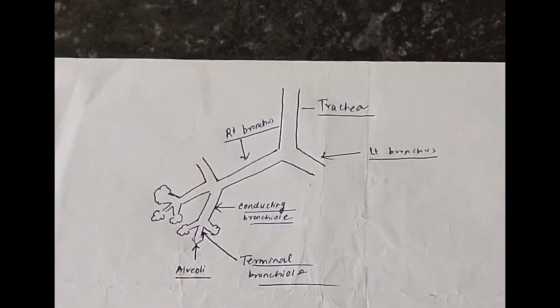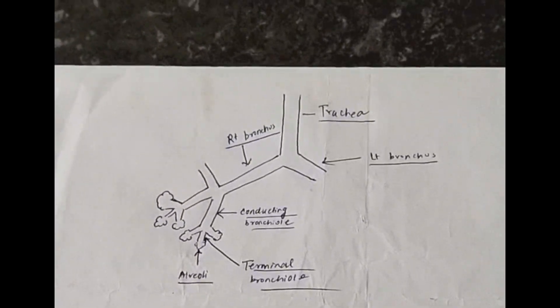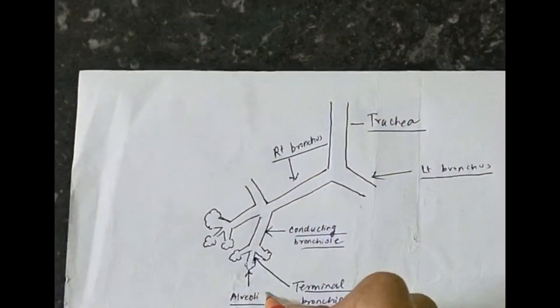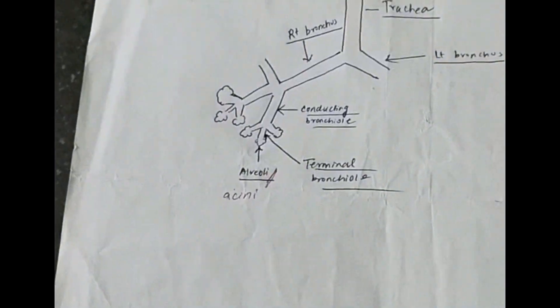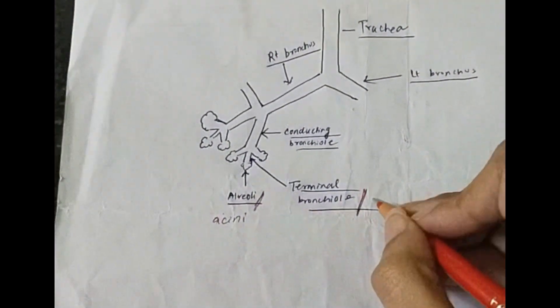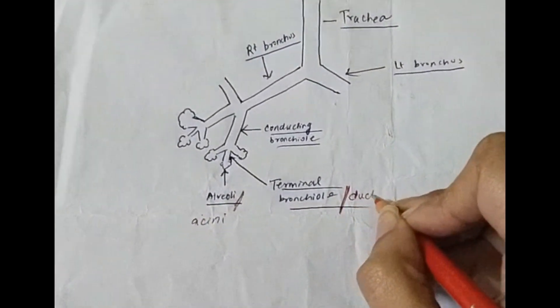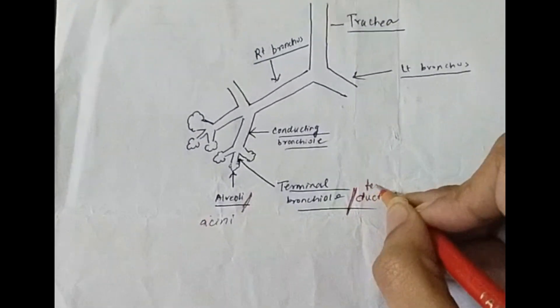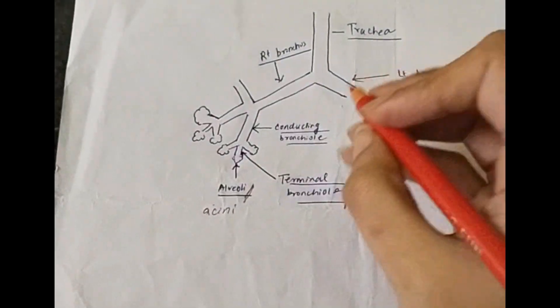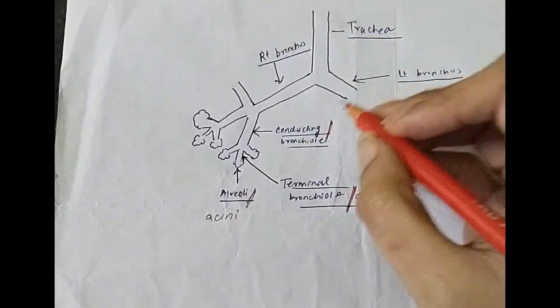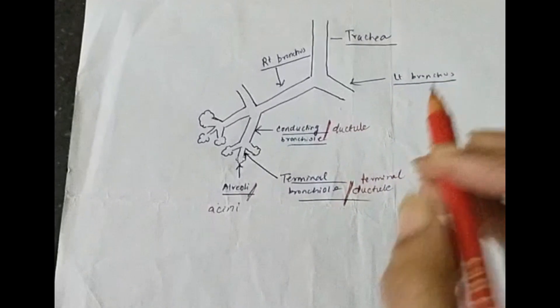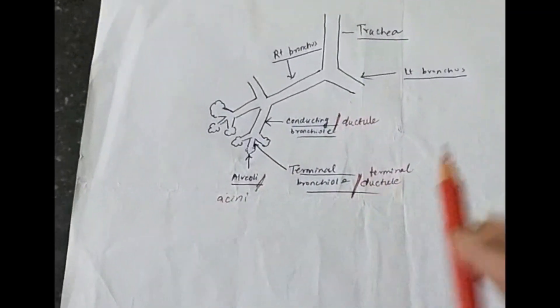Now just homologous to this is your breast. In place of alveoli you have acini of the breast which is the milk producing units. In case of terminal bronchioles you have the ductule or rather the terminal ductule. In place of conducting bronchioles you have the ductule. If this is the ductule, this is the terminal ductule.